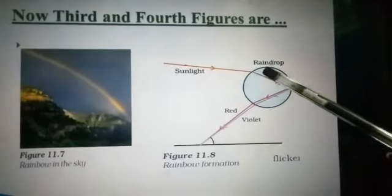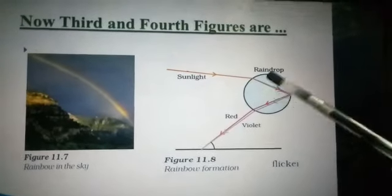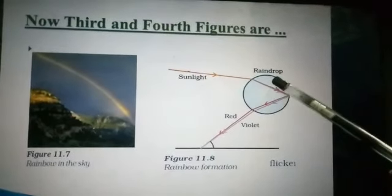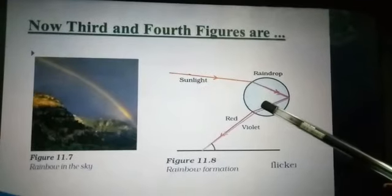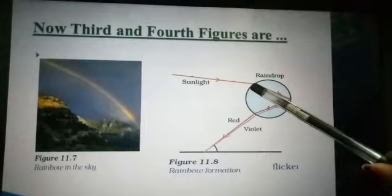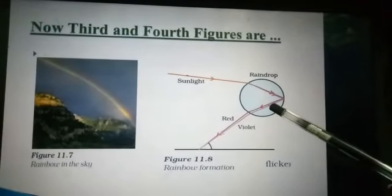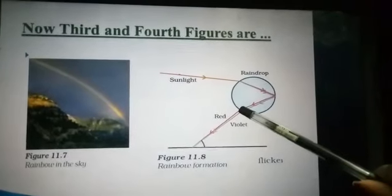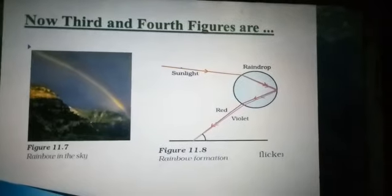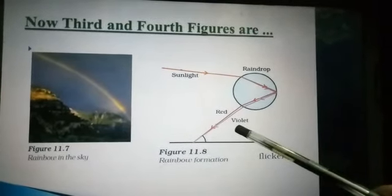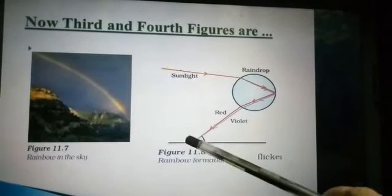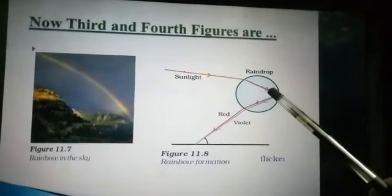So two refractions are occurring and one total internal reflection is occurring. You will observe red color on top and violet below. Here is the observer — any person — with the sun behind and water droplets in front, and they will observe a rainbow.